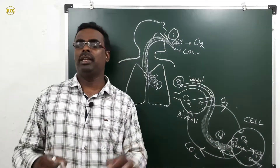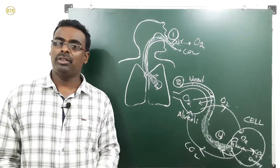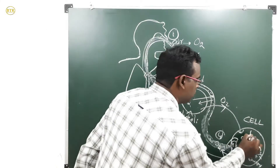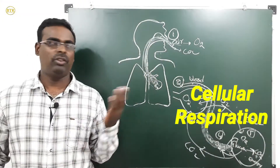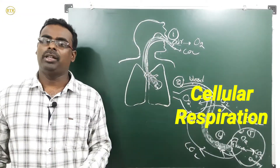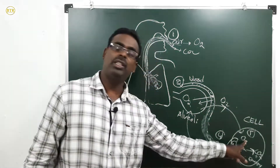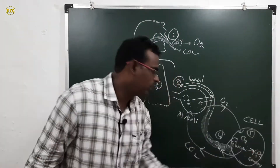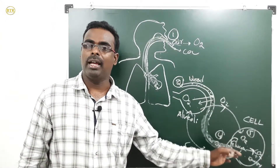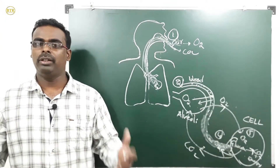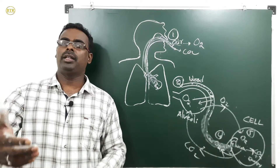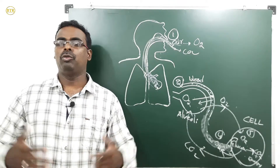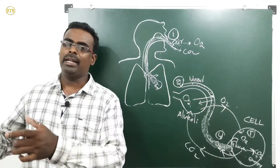The fifth step occurs inside the cell — that is cellular respiration. The cell utilizes the oxygen gas to break down the glucose, and carbon dioxide and energy are released. The process by which a cell breaks down the glucose molecule to produce carbon dioxide and energy is called cellular respiration.